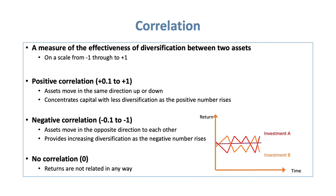We now turn attention to what is effectively a measure of the effectiveness of diversification — that is correlation — which is an important part of the exam, and it's almost inevitable you'll get a question on it. Correlation is the chemical reaction that occurs between two assets, measured on a scale from minus 1 through 0 up to plus 1.